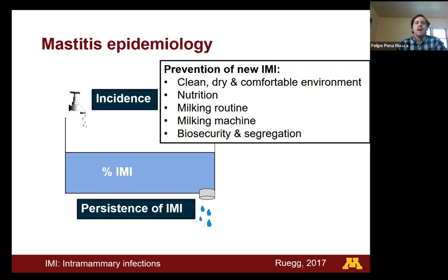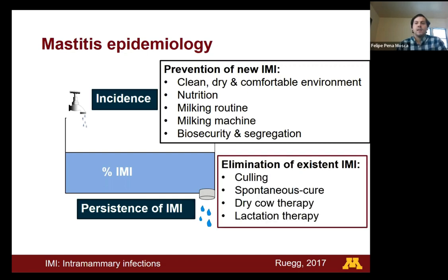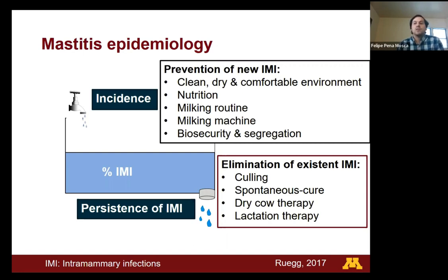At the same time, another factor that has a big impact on the prevalence of infected cows is what is called the persistence of intramammary infections — how much time the cows remain infected. We also have some ways of dealing with this. For instance, we could sell cows that have chronic intramammary infections, which would reduce the proportion of infected animals. At the same time, some microorganisms will tend to have a high spontaneous cure rate, meaning they will be eliminated by the mammary gland regardless of whether we intervene.